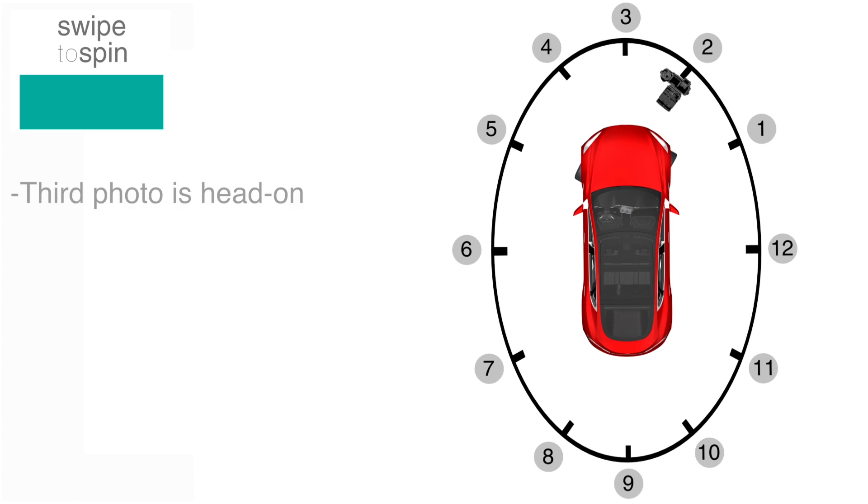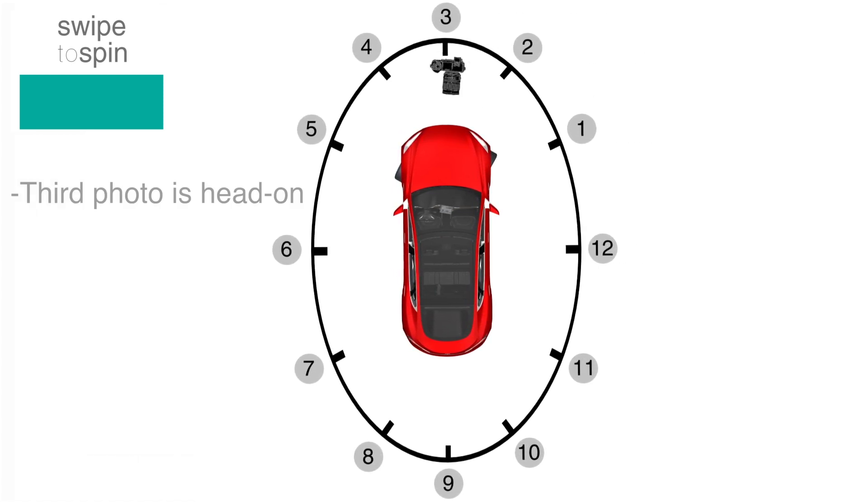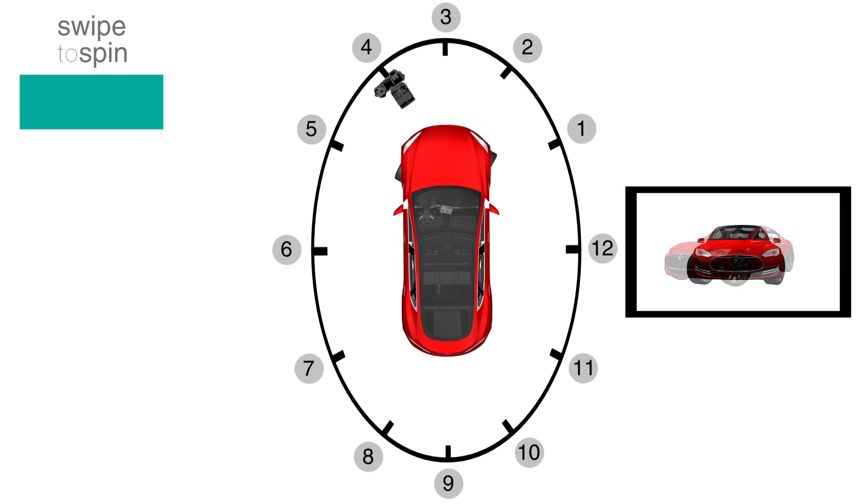Your third photo will be with the car head on. In total, you'll take one photo of each of the car's sides and 4 sets of 3-quarter shots.